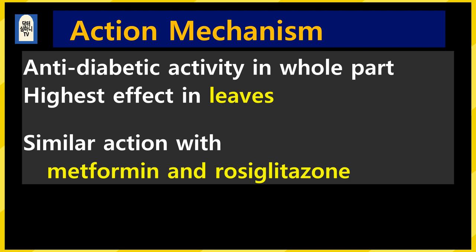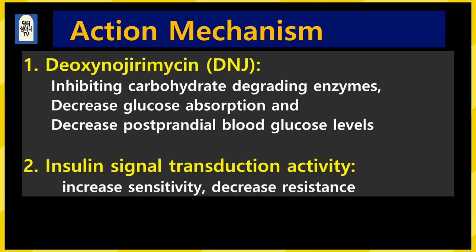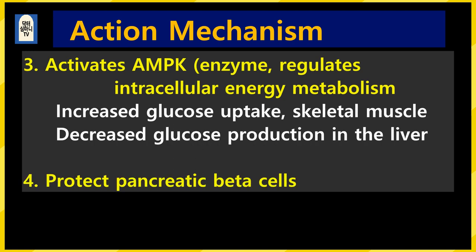The mulberry leaf has a similar mechanism of action to typical diabetic drugs metformin and rosiglitazone. 1. The most important active ingredient, the deoxynojirimycin (DNJ) component, inhibits enzymes that break down carbohydrates, so glucose absorption is reduced and post-prandial blood sugar rise is reduced. 2. Because it activates insulin signaling, insulin sensitivity is increased and resistance is reduced. 3. Among the enzymes that regulate energy metabolism in cells, AMPK is activated by Morus alba — as a result, uptake of glucose into skeletal muscle is increased and glucose production in the liver is reduced. 4. It has a protective effect on pancreatic cells.